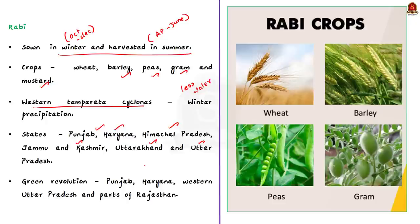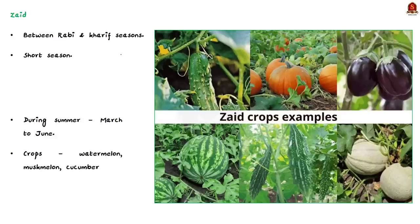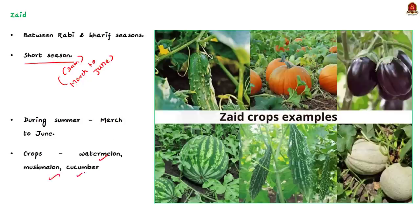The success of the Green Revolution in Punjab, Haryana, western Uttar Pradesh and parts of Rajasthan has also been an important factor in the growth of Rabi crops in those states. Finally comes the Zayad season. In between the Rabi and Kharif season there is a short season during the summer months, from March to June. Some crops produced during the Zayad season include watermelon, muskmelon and cucumber. This covers the different cropping seasons in India.